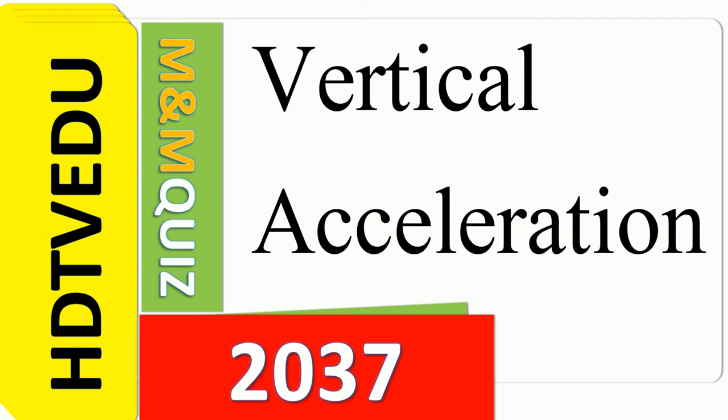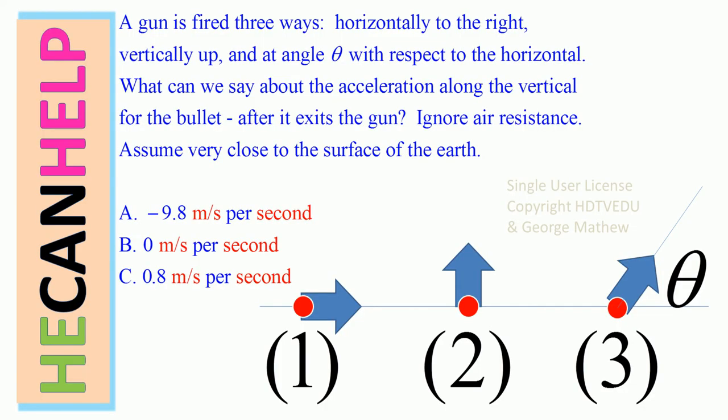M&M quiz 2037, Vertical Acceleration. A gun is fired three ways: horizontally to the right, vertically up, and at an angle theta with respect to the horizontal.